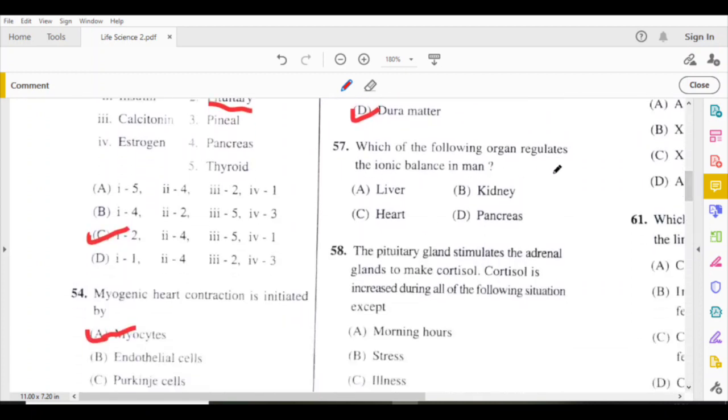Which of the following organs regulates the ionic balance in man? Kidney regulates the ionic balance.